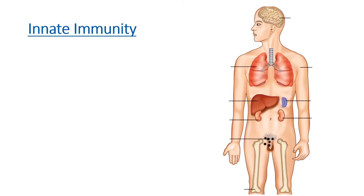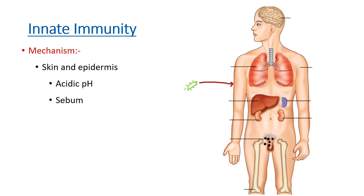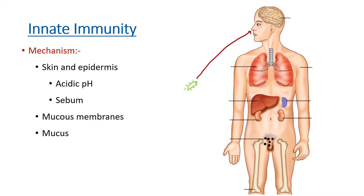Regarding the mechanism of innate immunity: if a pathogen tries to enter through the skin, the skin itself acts as a mechanical barrier. Moreover, our skin has an acidic pH and secretes sebum, which destroys or decreases the chances of pathogen entry. If the pathogen tries to enter through nasal passages, the mucous membrane secretes mucus to trap pathogens, and hairs inside delay their movement into the respiratory tract. Even if it crosses those, cilia move any pathogen or debris out of the body.